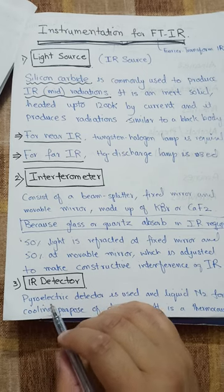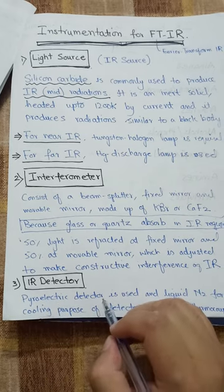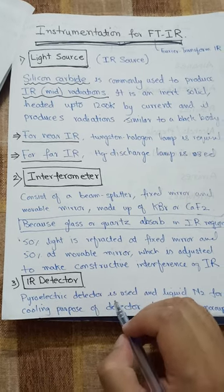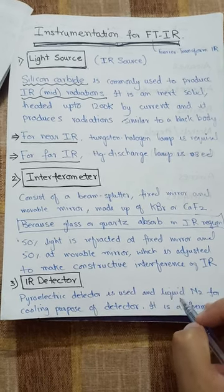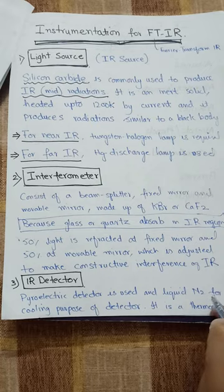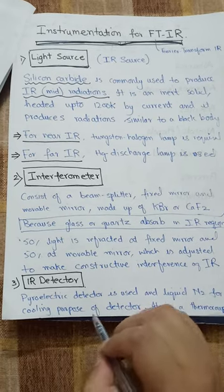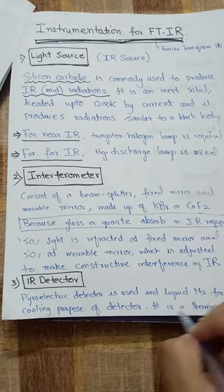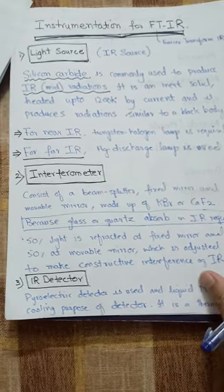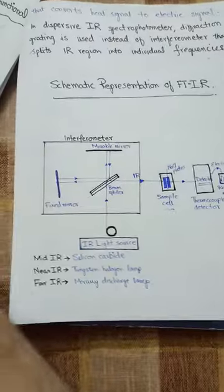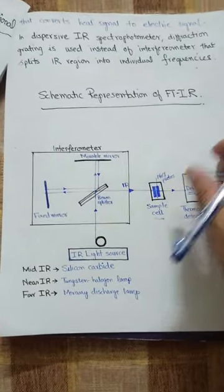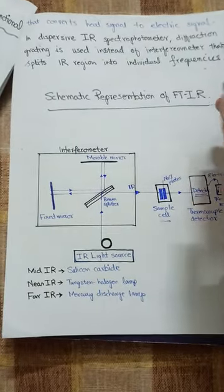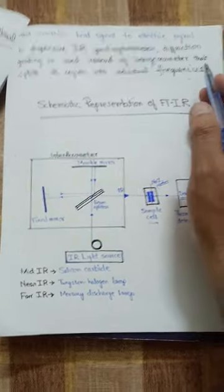The last component of the IR spectrophotometer is the IR detector. The IR detector is a pyroelectric detector, and liquid nitrogen is used for cooling the detector. It is a type of thermocouple that converts the heat signal into an electrical signal.